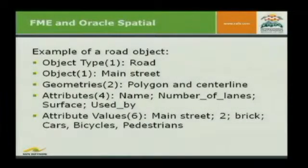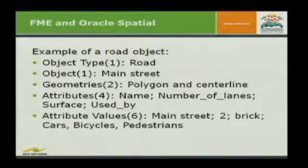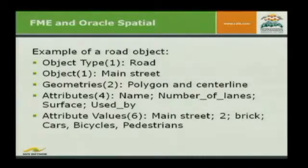What I had in there was, for example, a road object — just one object type, also one object — but the first complexity came when it had two geometries: a road polygon and a centerline. It had four attributes: name, number of lanes, service, and use by. And it had six records in the attribute values table — main street for name, number of lanes is two, service is brick — but it had three records for use by: used by cars, bicycles, and pedestrians.